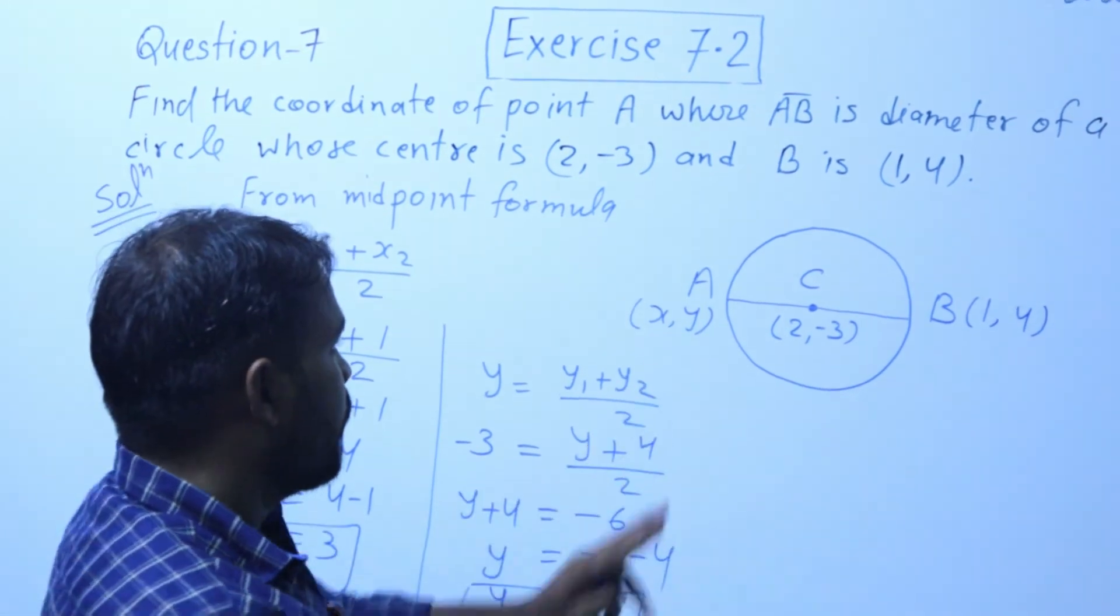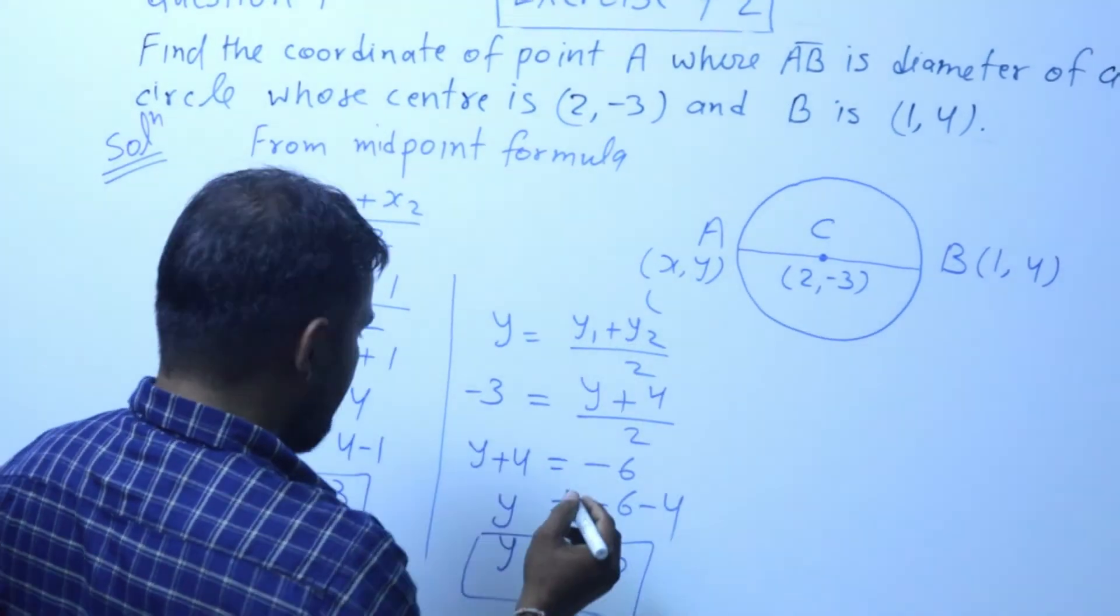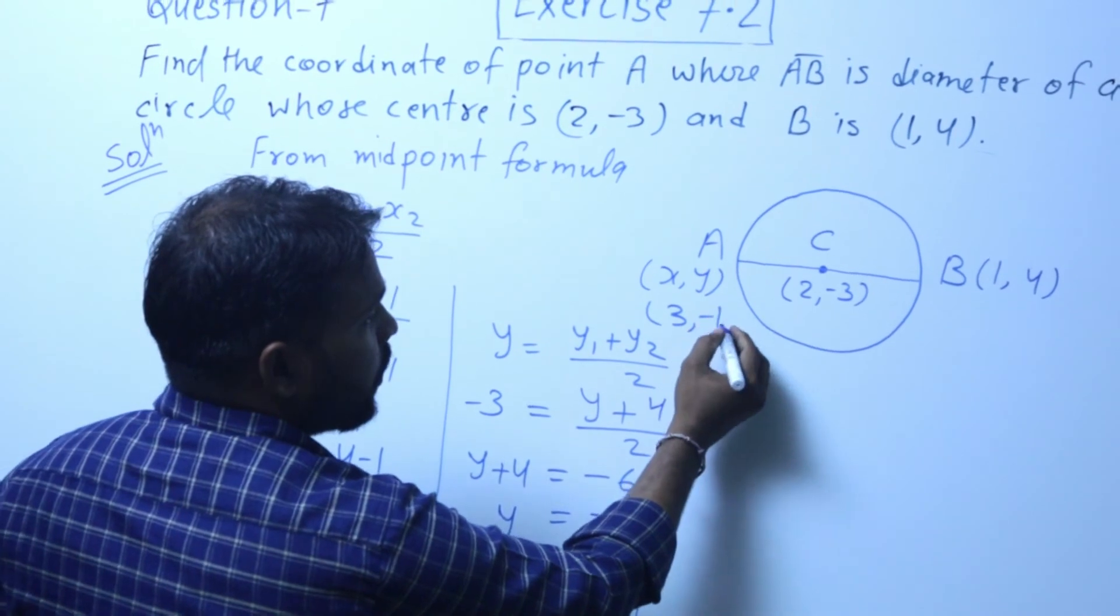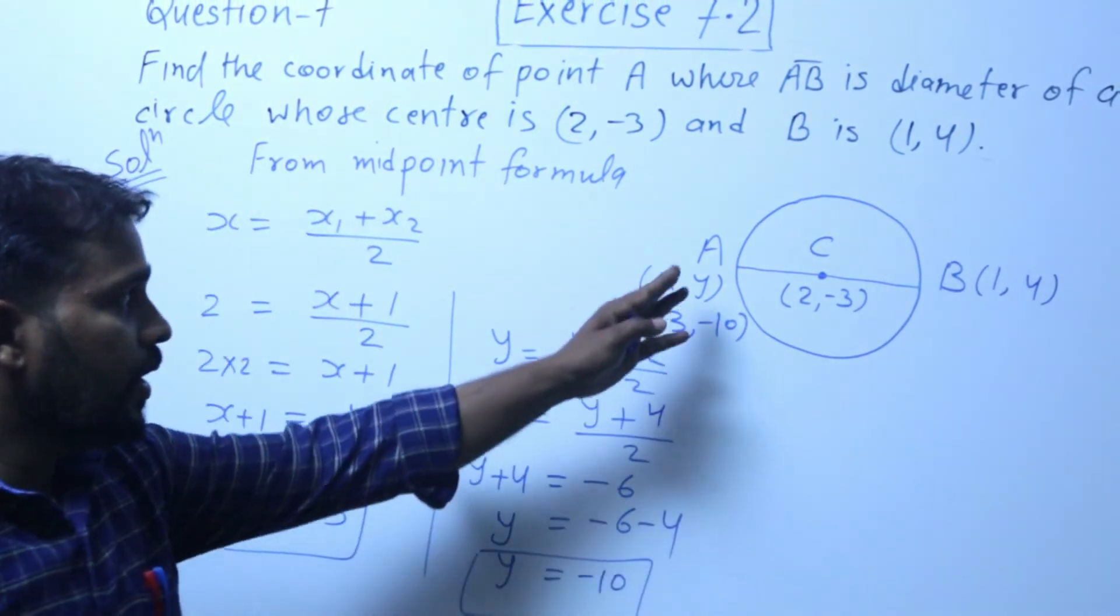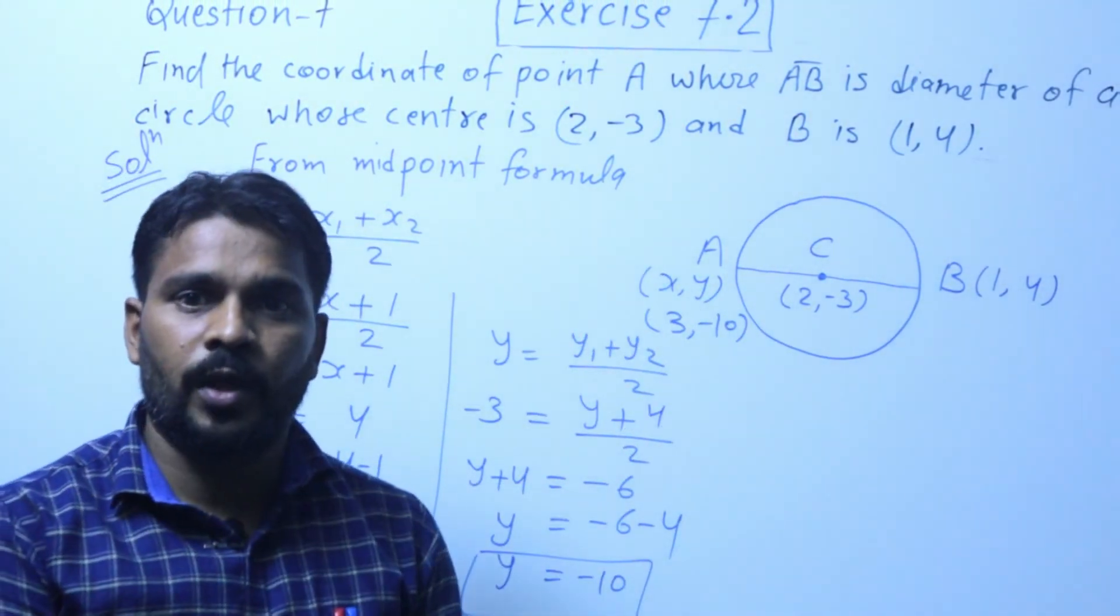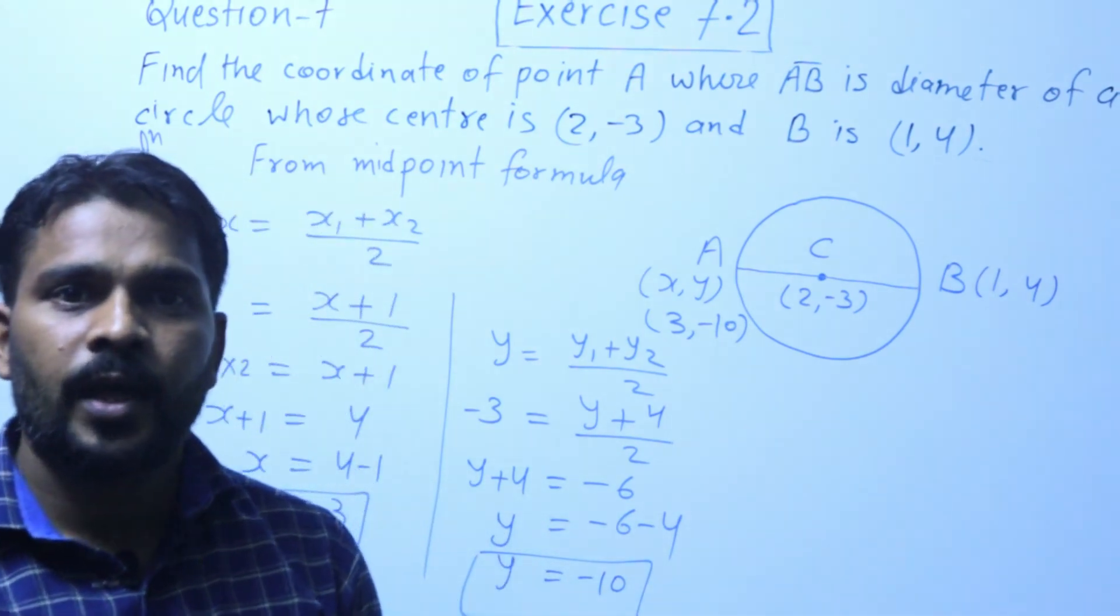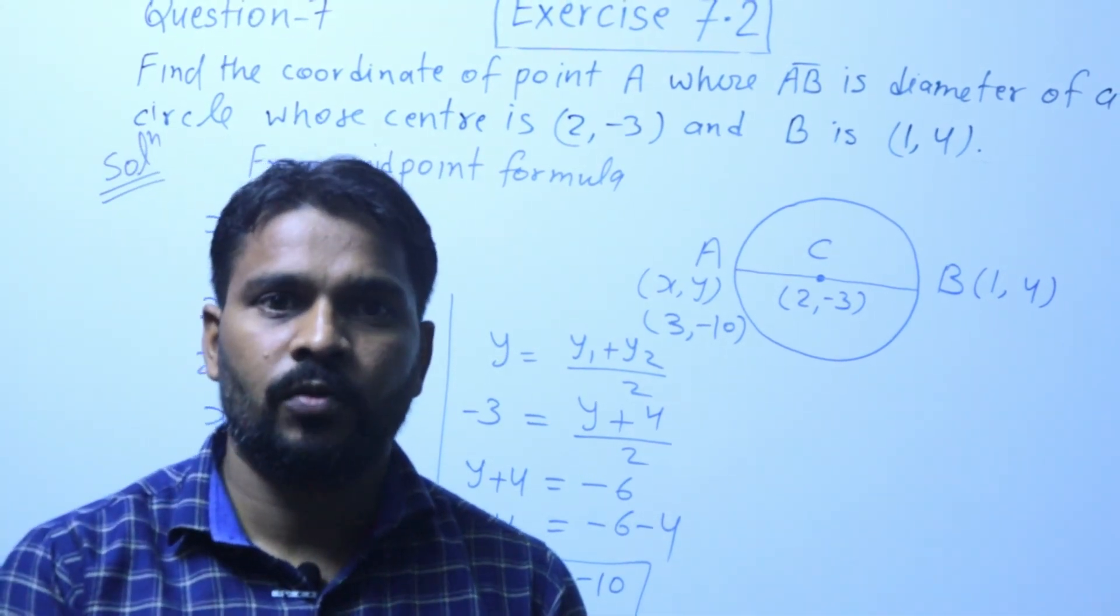So here you got A's coordinate: x value is 3 and y value is -10. So A's coordinate is found as (3, -10). I hope you will like this video and share it maximum, thank you.